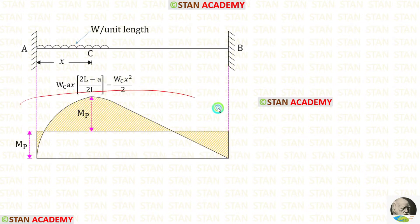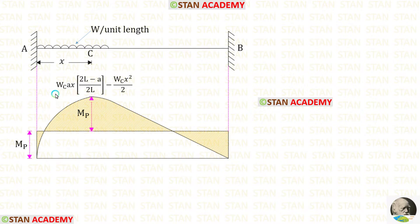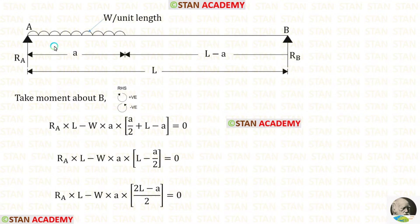This is the bending moment diagram during the collapse. To get this ordinate, we have to consider this beam as a simply supported beam. Let us see how this ordinate comes. Let us consider a simply supported beam subjected to UDL for a distance of A from the left support.